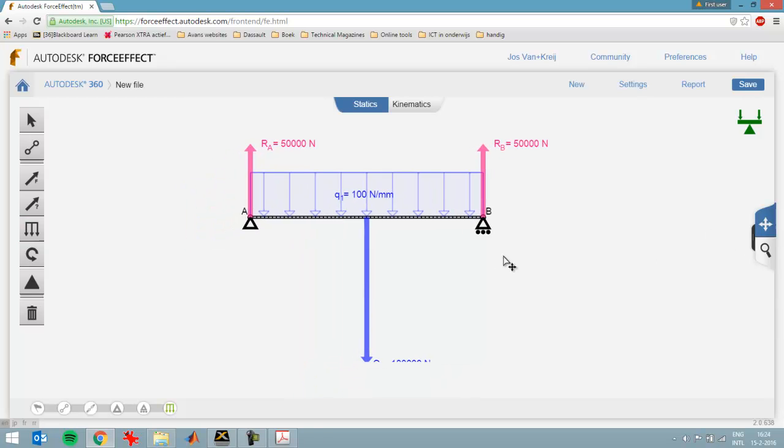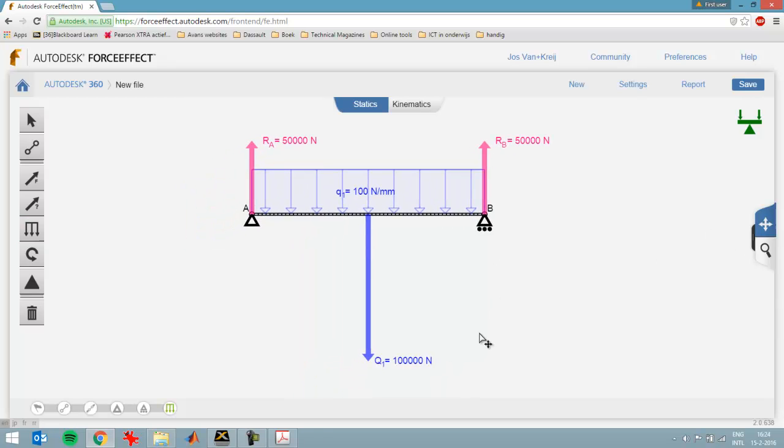I can move the diagram a little. So 100 Newton per millimeter. Autodesk Force Effect immediately recalculates that in a total force. Now I can use the report to get the shear and moment diagrams for this beam.